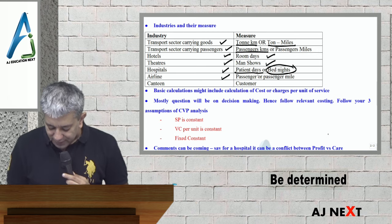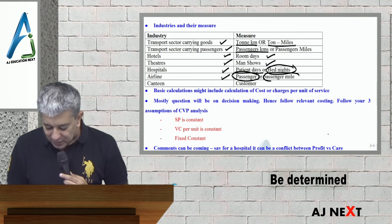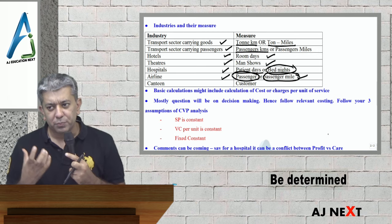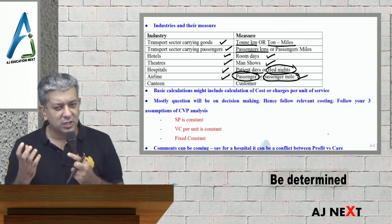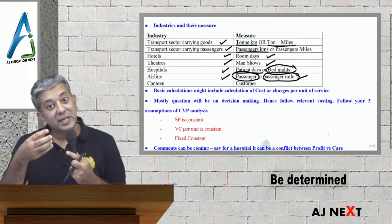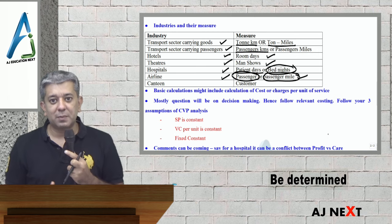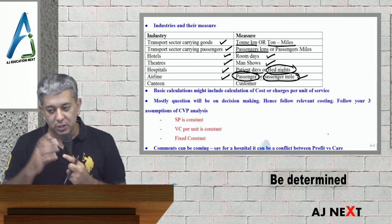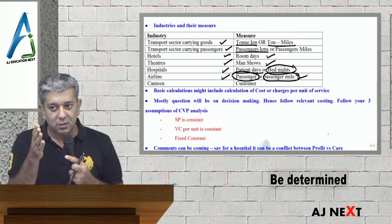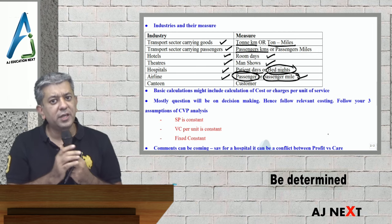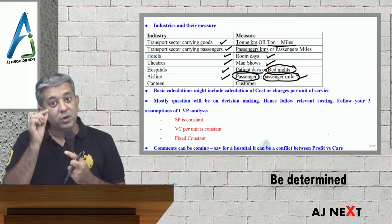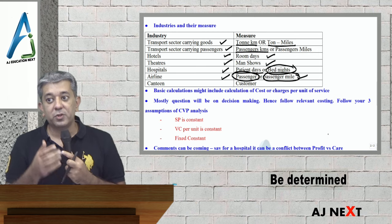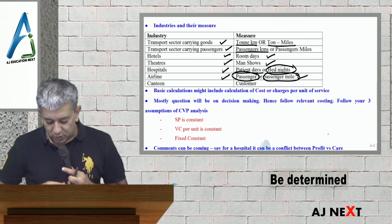Airline ke andar per passenger or passenger miles — ye ek naya funda aaya hai. Jaha pe companies try to compute ki har passenger mile ke liye how much they are earning — ye basically unki own internal information ke liye hota hai. Lekin jaha pe performance evaluation ka base hoga, example ke tor pe you are trying to compare Spice Jet with Indigo — then in that particular case, this could be one of the KPIs that will be used, ki profit per passenger mile kitna hai ya phir jo revenue per passenger mile hai, wo kitna hai. Uske baad agar canteen hoga, toh per customer or something like that.